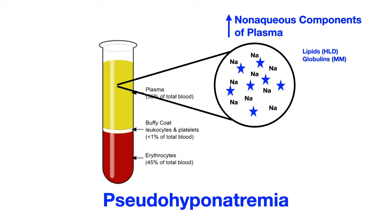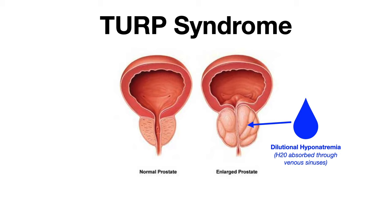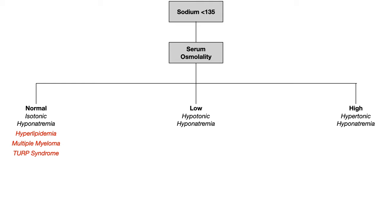In TURP syndrome — transurethral resection of the prostate, a surgical procedure to correct an enlarged prostate — water is irrigated at the area being resected. There is so much venous sinus surface area that absorbs that water, you actually get a dilutional hyponatremia. So TURP can cause low sodium levels because water is absorbed through the venous sinus during surgery.